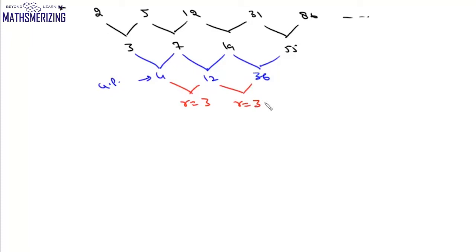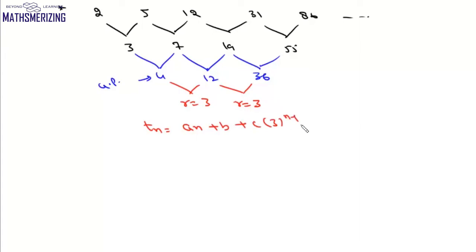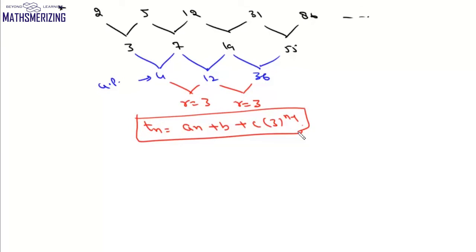Since the successive difference is in GP, the general term t_n is given by a·n plus b plus c into r to the power n minus 1, where r = 3. So t_n = a·n plus b plus c·3 to the power n minus 1. We now need to find the values of a, b, and c.